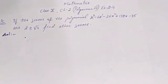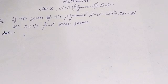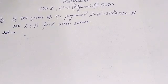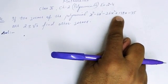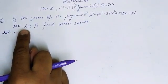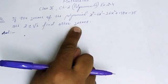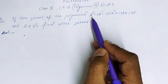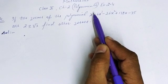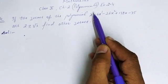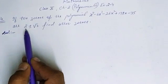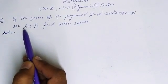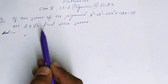Let's solve this question, taken from Class 10 Chapter 2 Polynomials, Exercise 2.4, Question 4. The polynomial is x⁴ - 6x³ - 26x² + 138x - 35. This is a bi-quadratic polynomial of degree 4, so it has a maximum of four zeros. It is given that 2+√3 and 2-√3 are two zeros of this polynomial.